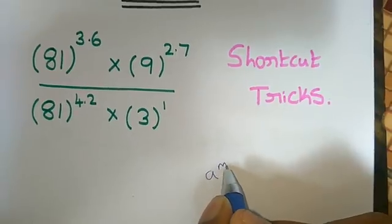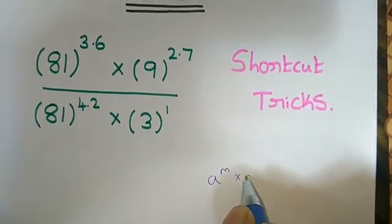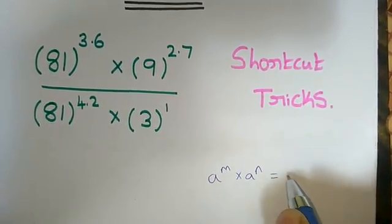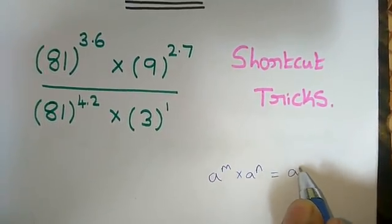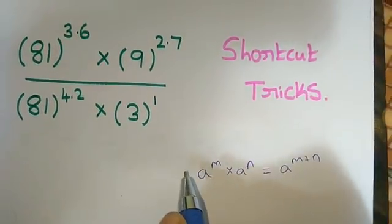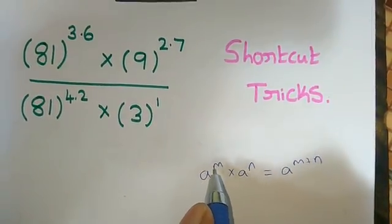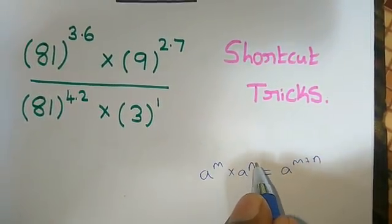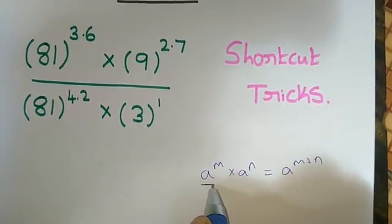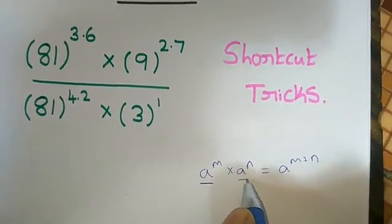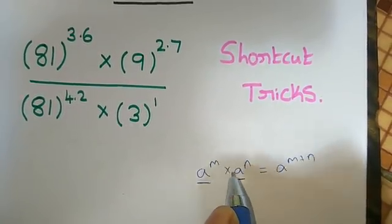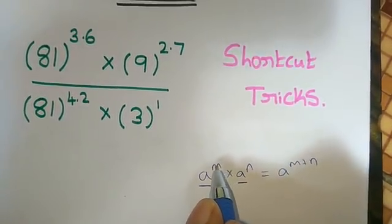A power m into a power n is equal to a power m plus n. If you use this way, our power value is equal — the bases are equal, so we can add the two exponents.